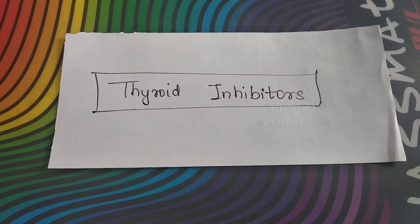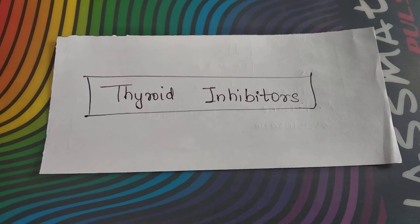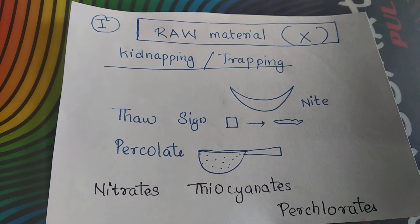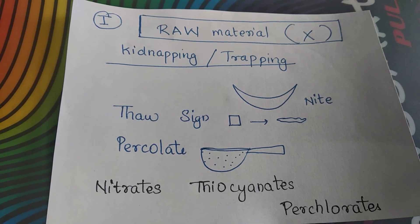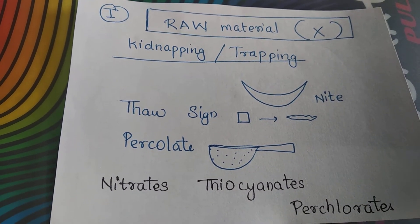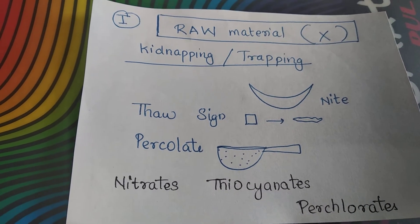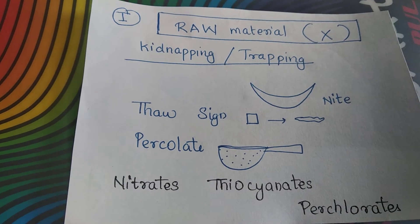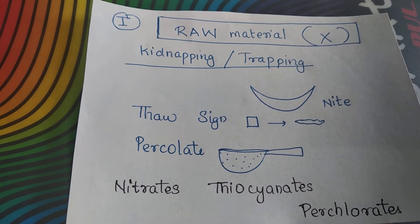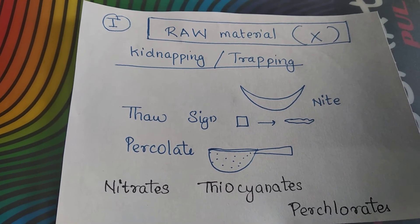Hello friends, in today's video we will see the classification of thyroid inhibitors. The concept is: firstly we require raw materials to make a product, the second stage is synthesis of the hormone, the third stage is to release that product, and the fourth stage is to destroy it. So here we are trying to inhibit the formation or manufacturing of the product.